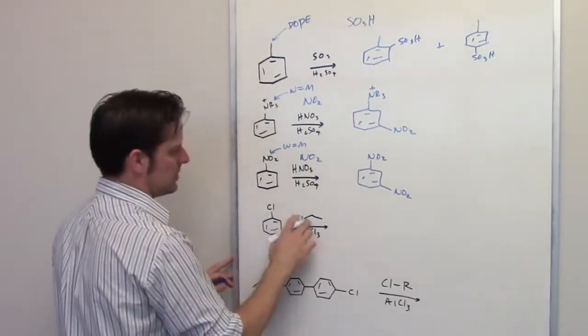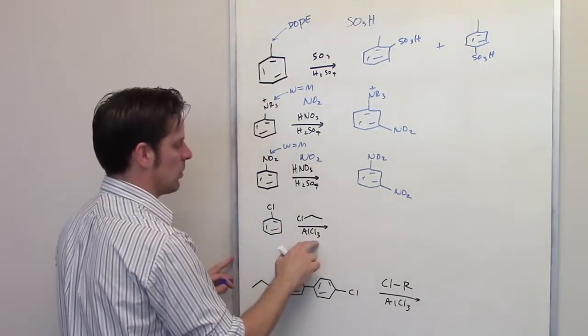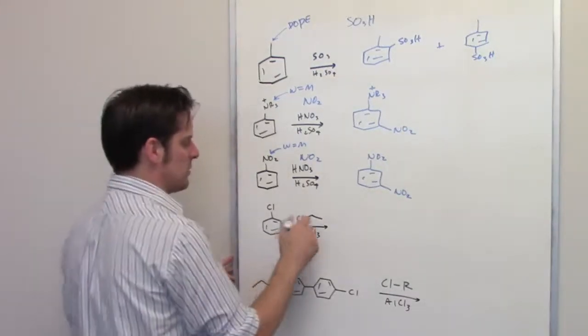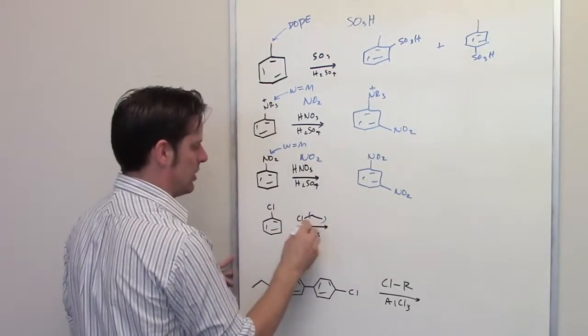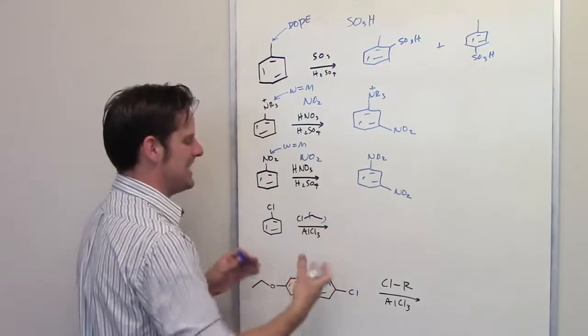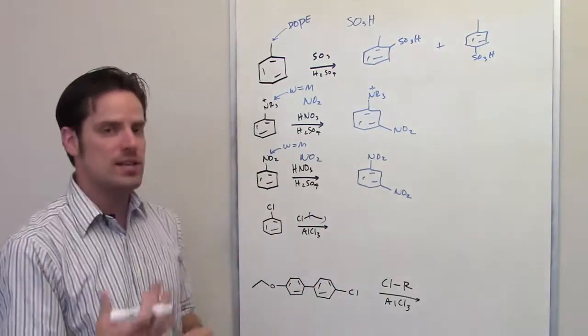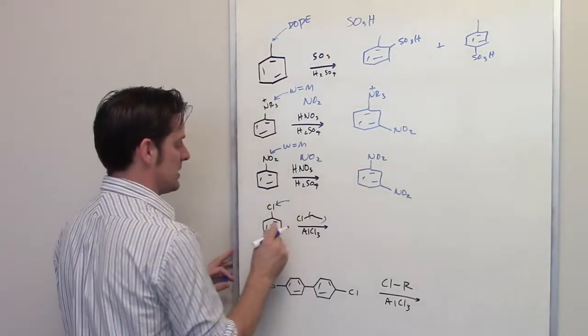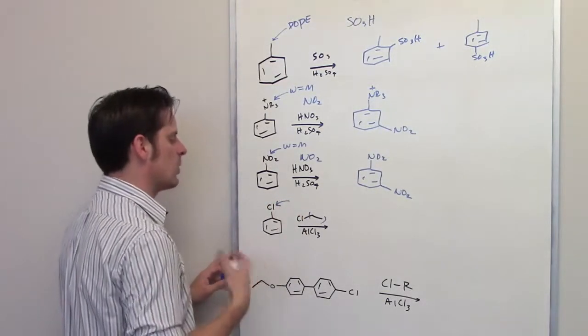Over here, we look at this reaction. This is an ethyl chloride treated with aluminum chloride. This is Friedel-Crafts alkylation. Friedel-Crafts alkylation places this alkyl group right here onto the ring. In other words, I'm going to get a CH2CH3 chain dangling off of the ring. Where is that going to be? It all depends on what the nature is of this pre-existing substituent. Is that a donor or is it a withdrawer?